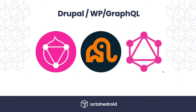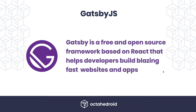For Drupal and WordPress, both tools provide GraphQL endpoints. Drupal provides JSON API out of the box; WordPress provides REST endpoints out of the box. In the contributed space, there is a GraphQL module for Drupal and a GraphQL plugin for WordPress that allow you to expose your data via a GraphQL endpoint.